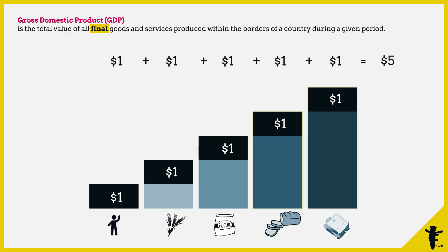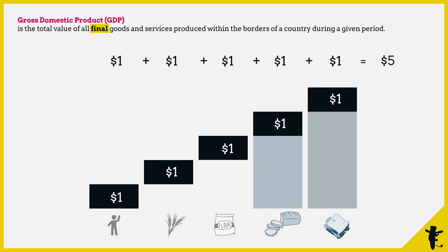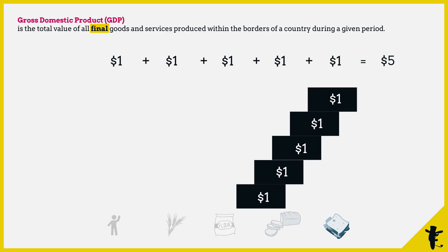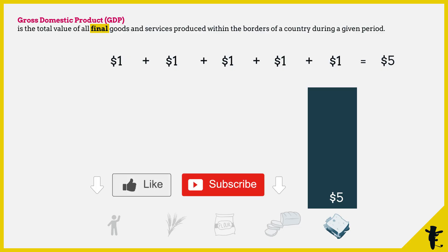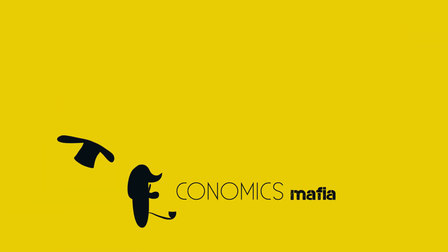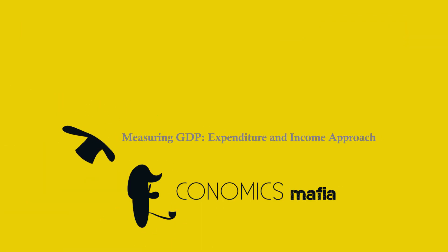You see, the output approach and the value added approach are quite similar. In the value added approach, you add up all the additional value, which equals the value of the final output. That's not the only way to measure GDP — next up: measuring GDP using the expenditure and income approach.